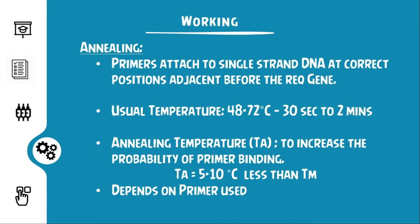The second step involves the process of annealing, where the primers go and attach to the single-strand DNA molecule at the correct position adjacent to or before the gene of interest. This step usually takes place at a temperature between 48°C and 72°C and for a duration of about 30 seconds to 2 minutes. The annealing temperature is determined to increase the probability of primer binding — it is 5 to 10 degrees Celsius less than the melting temperature, and also depends on the type of primer pair used.